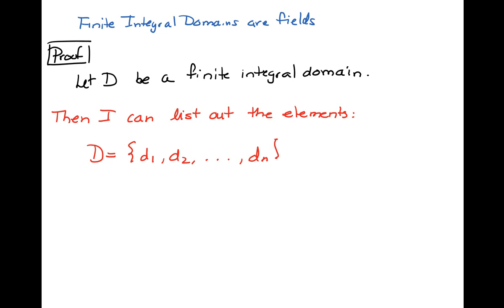The key here is that I know there's a last element, so I'm going to assume that there are n elements in this finite domain. What we need to show to get this thing to be a field is that given any arbitrary d with d not equal to zero, d is going to be invertible.